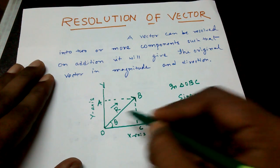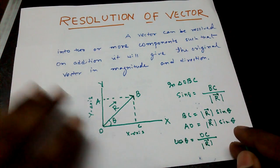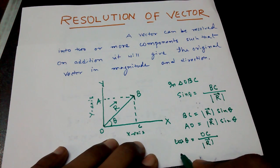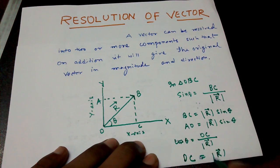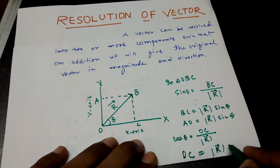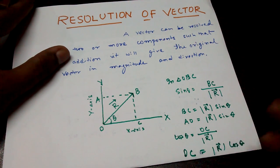Hypotenuse, this is R, that is OB. Again on cross multiplication, I will get OC is equal to R cos theta. Now what is OC?